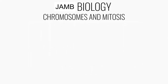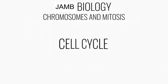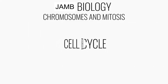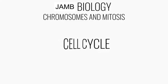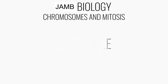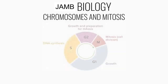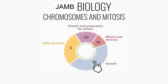A series of events known as the cell cycle takes place in a cell as the cell grows and divides. This process starts with a growth phase where the cell organelles start to develop. This is followed by DNA synthesis, where the DNA is replicated.